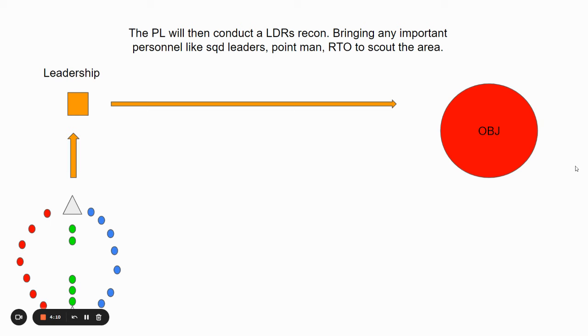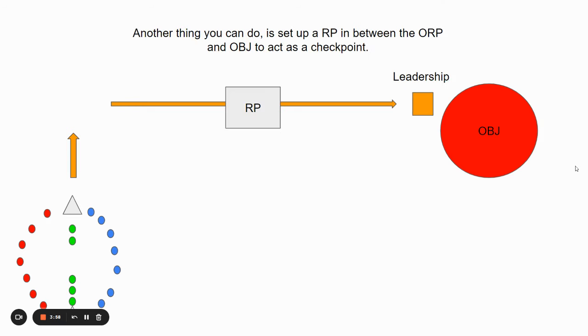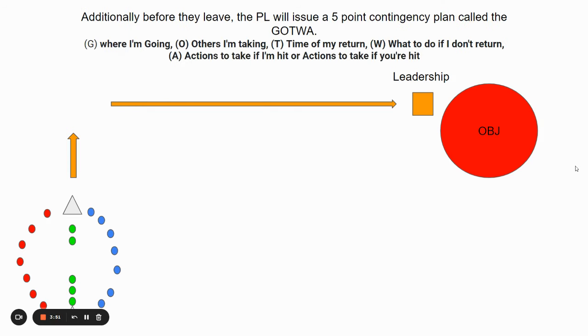For the order of march, that's up to the platoon leader on how to set that up, so whenever they walk out they know how to file a line properly. They're going to go to the objective and scout the area. Another thing you can do is set up a release point in between the ORP and the objective to act as a checkpoint.